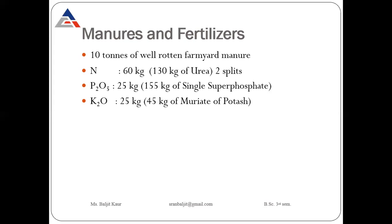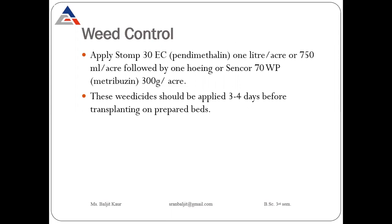The other nutrient requirements of tomato are nitrogen, phosphorus, and potassium. Nitrogen should be applied in two splits at the rate of 60 kg. The quantity of phosphorus required is 25 kg and the quantity of potassium is also 25 kg. For nitrogen we can use urea, for phosphorus single super phosphate, and for potassium muriate of potash.